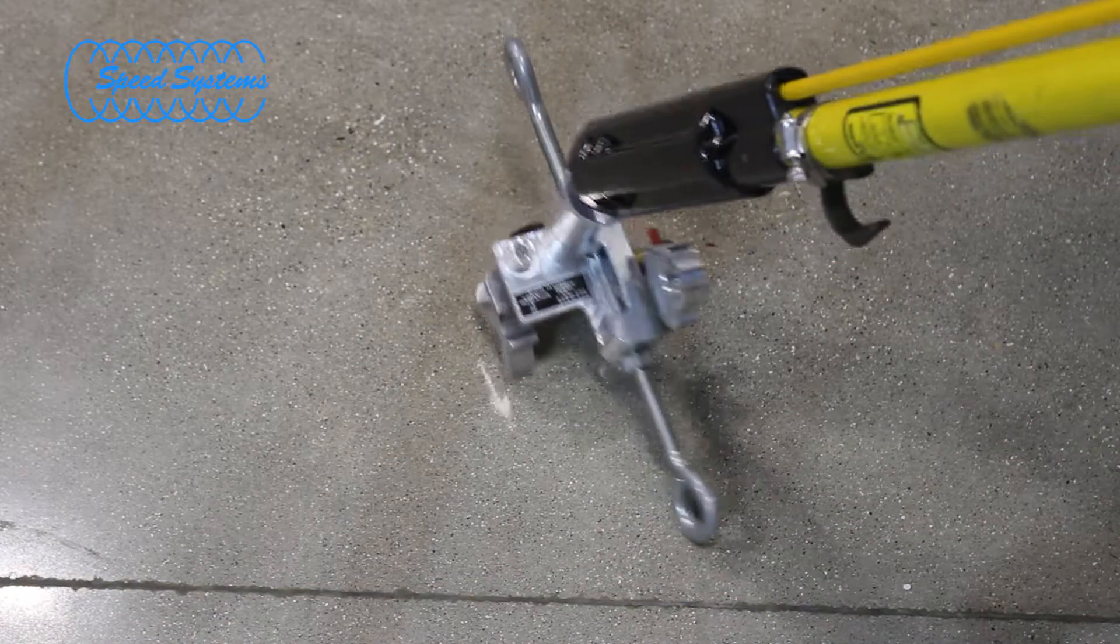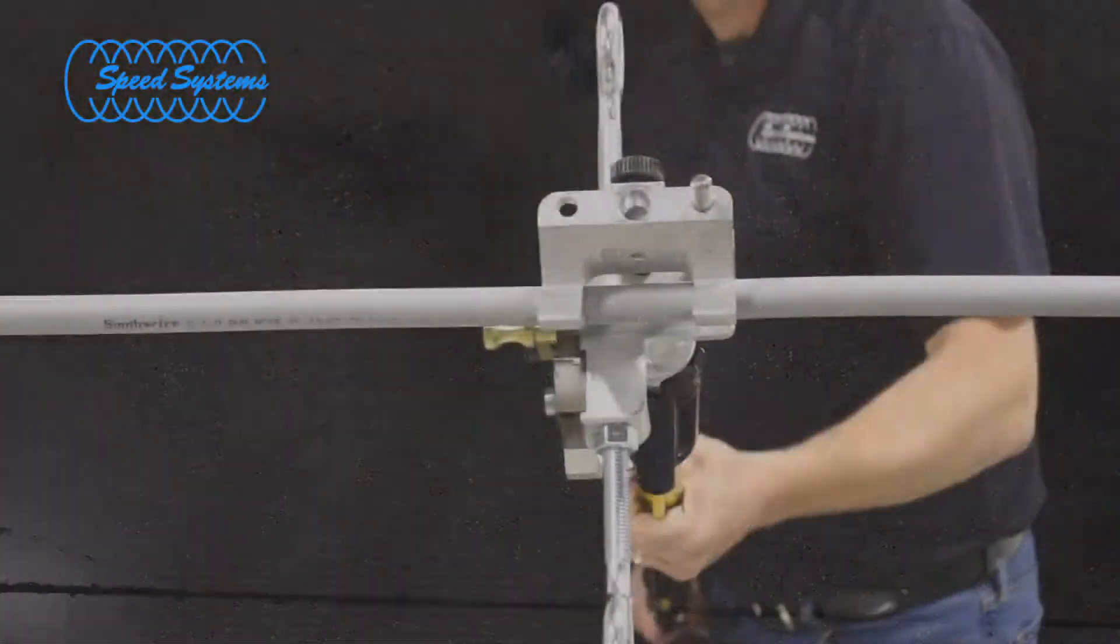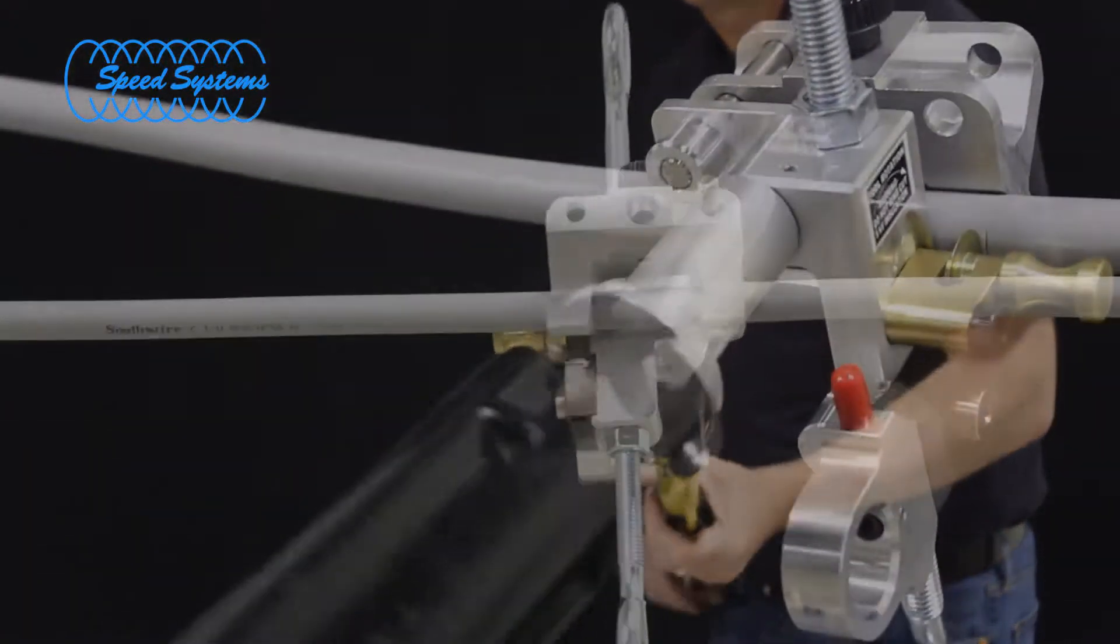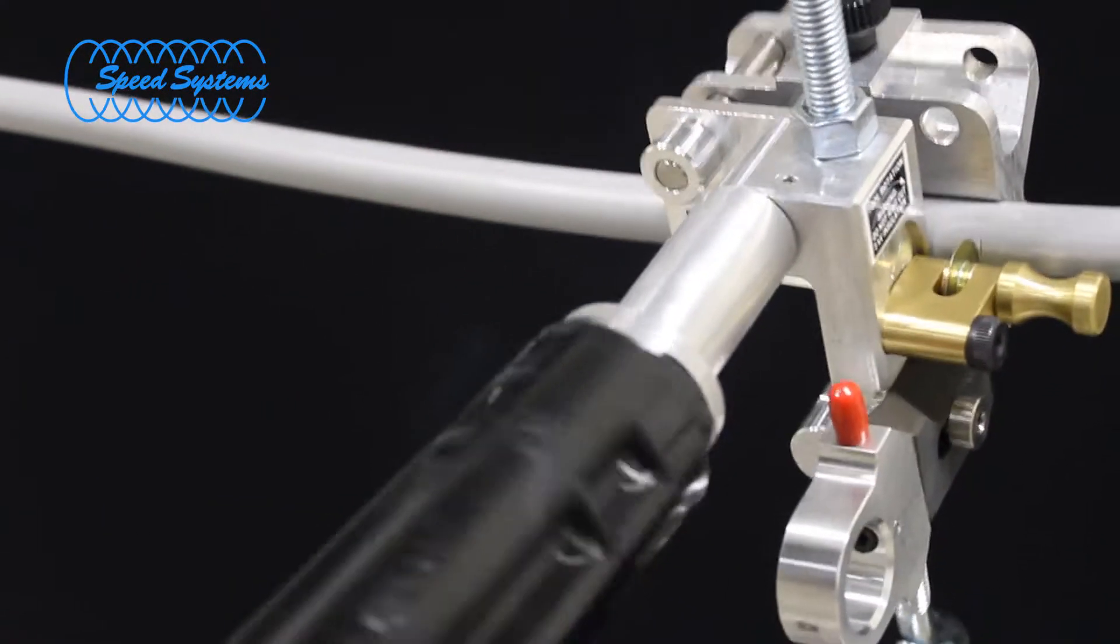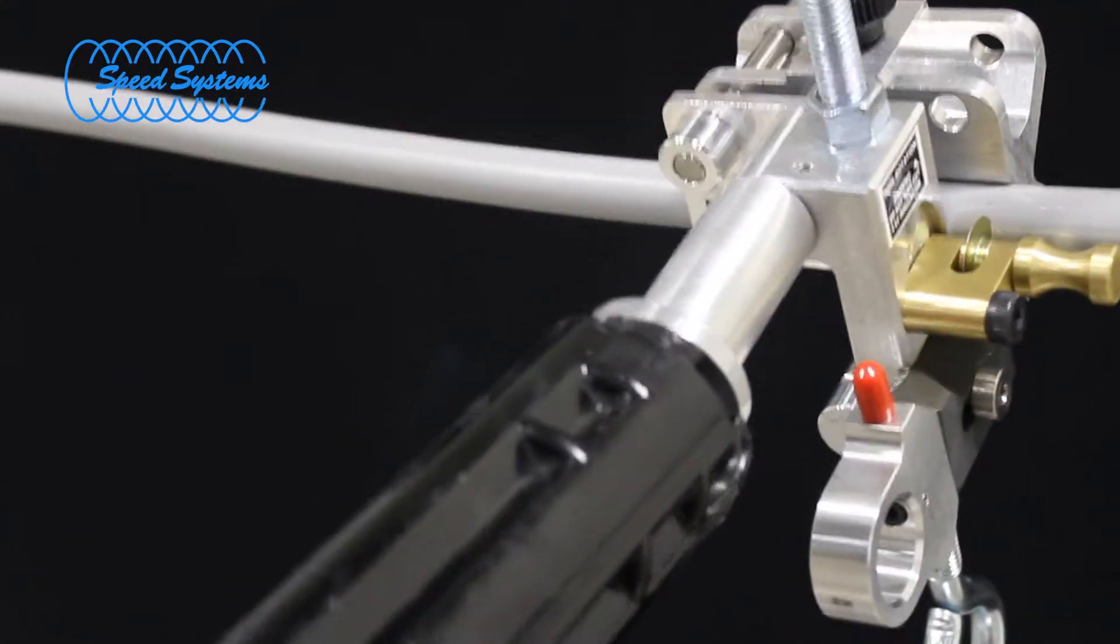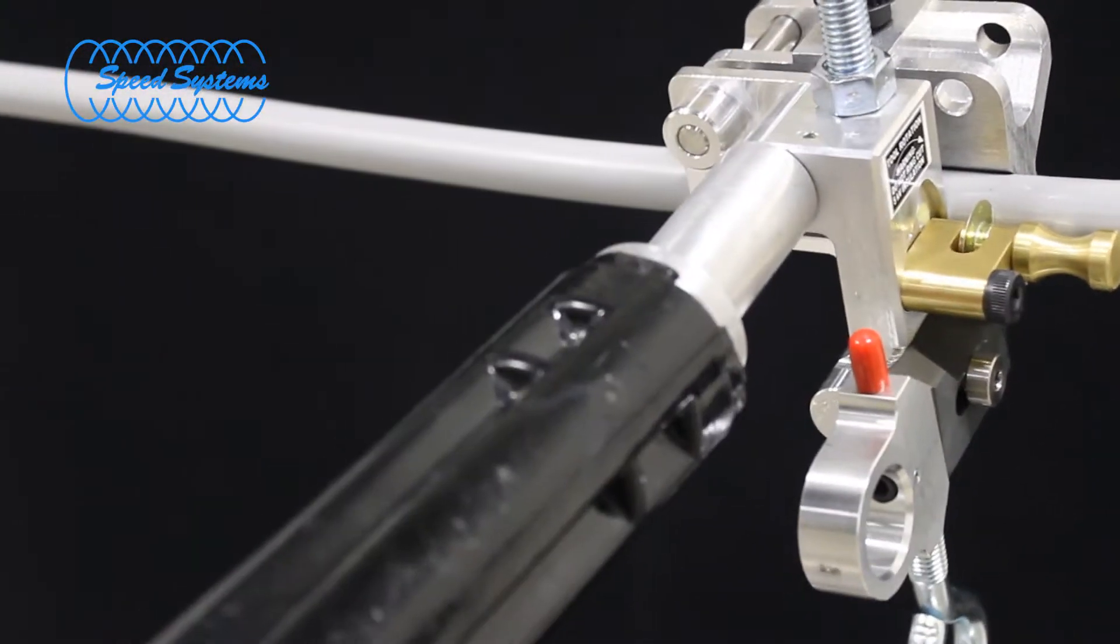Insert a shotgun stick into the cable clamp eye and position the tool on the cable. Tighten the cable clamp by turning the stick until the wringing blade is fully engaged and remove the stick from the cable clamp eye.